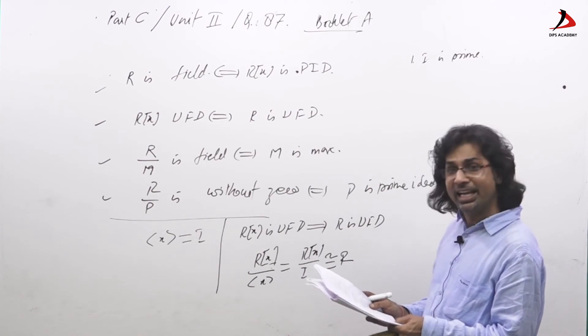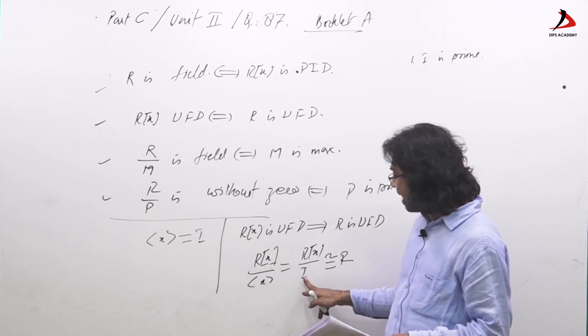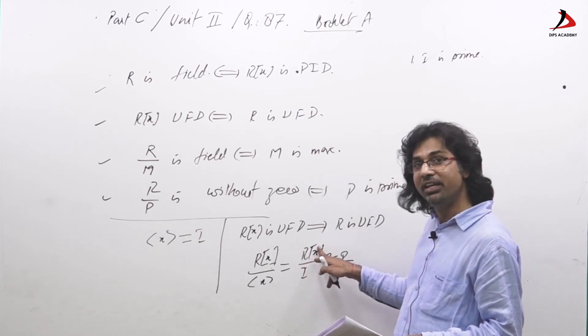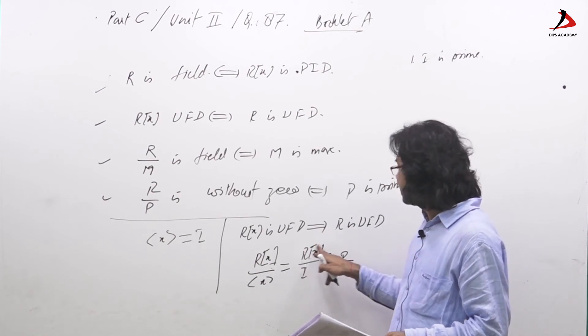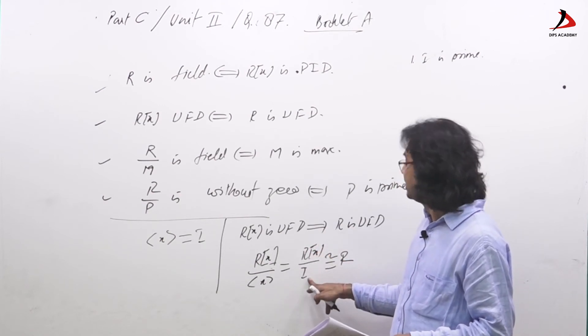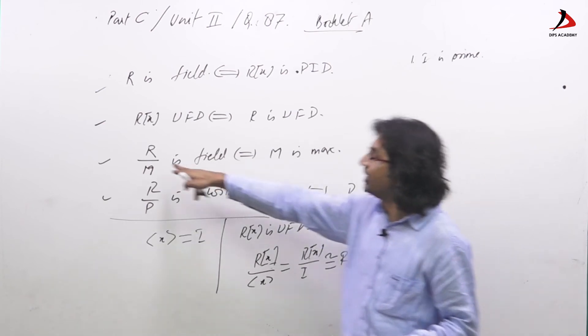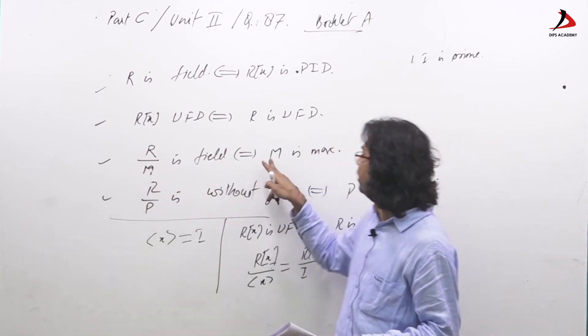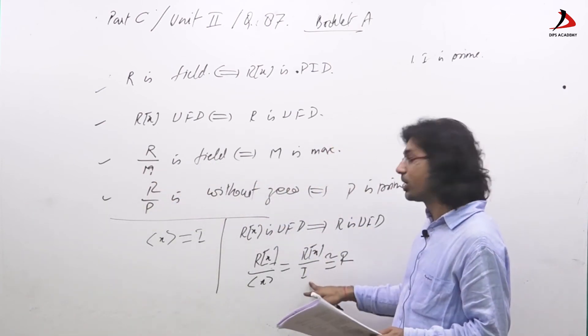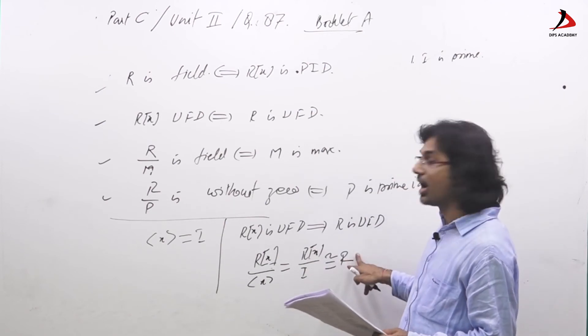Second, if I is maximal, since Rx is UFD, it is CRU. So Rx over I is field by this result. R/M is field if and only if M is maximal. So Rx over I is field, so R is field.